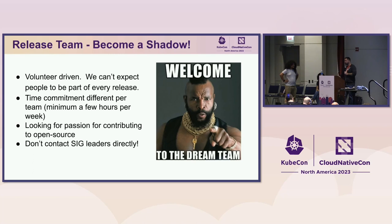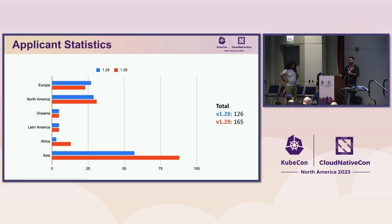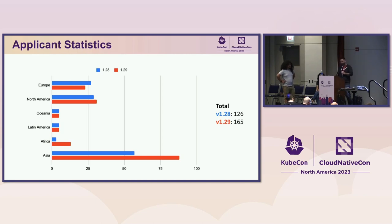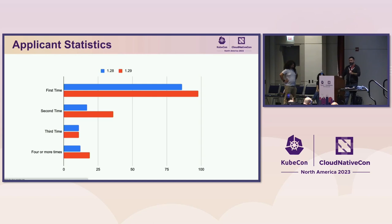What we're looking for is people that are passionate and contributing to open source. When reviewing applications, we do have a lot — in Kubernetes 1.28 we had 126 applicants, and in the most recent one we had 165. It's ramping up every time and getting more competitive. We can only welcome so many new people each time. But we encourage everyone to apply more than once — you have a much better chance the second or third time, especially if you're showing more experience over time.